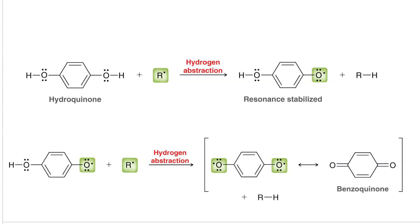Here's hydroquinone interacting with a radical. First we have hydrogen abstraction of one of the hydroquinone hydroxyl hydrogens. This gives us a resonance stabilized benzylic oxygen, where the radical is located.